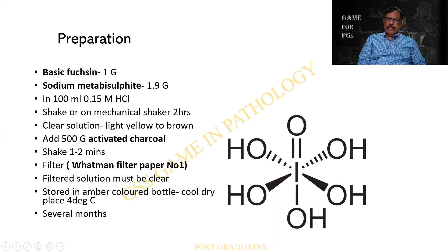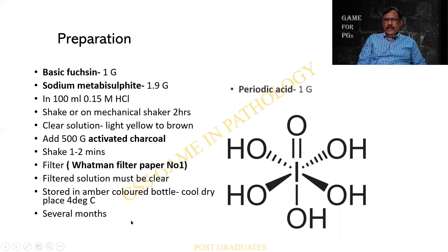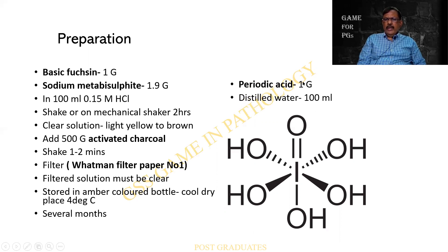The filter paper is Whatman's number one. After being filtered, it should be stored at four degrees in an amber coloured bottle, in a cool dry place — in which case it can be preserved for several months. And periodic acid is prepared by dissolving periodic acid powder, one gram in 100 ml. So these are the two components which should be prepared.